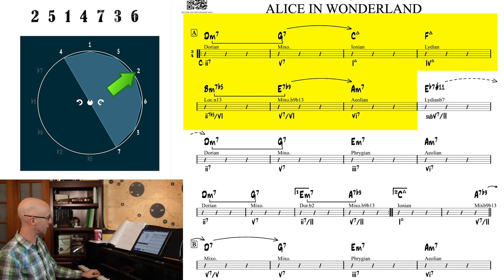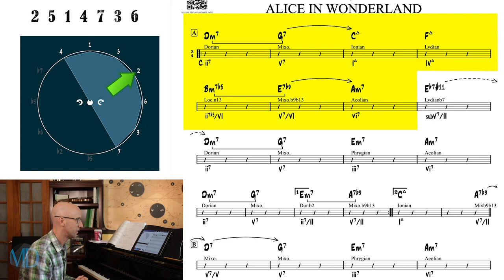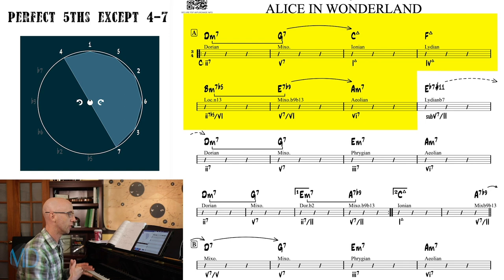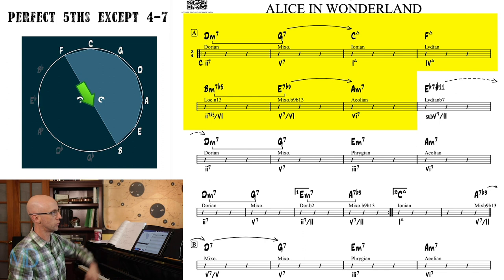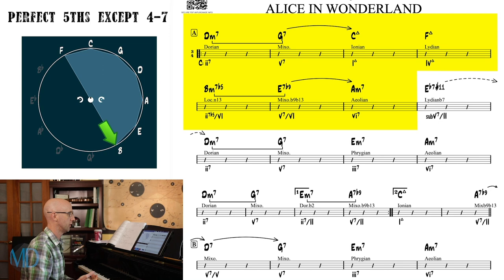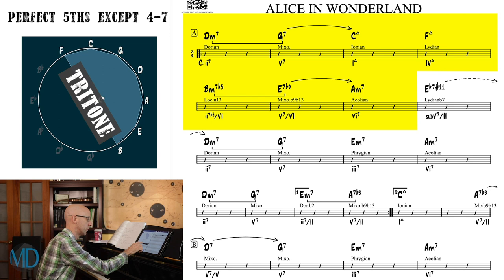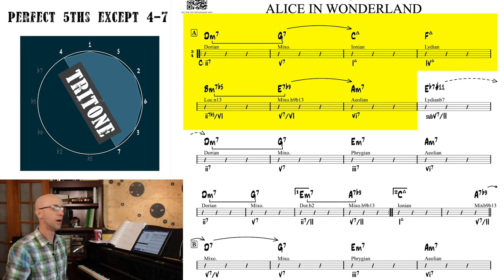So one thing worth noting is that all of these intervals are fifths as we travel counterclockwise around the circle, except for the F to the B. You see that diagonal line connecting F to B across the circle of fifths. This is a tritone, and this always happens between the 4 and the 7 of any major scale.